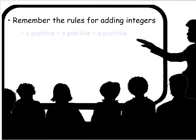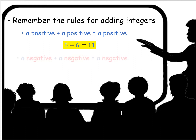For what we're doing today in the activity, we need to remember the rules for adding integers. Positive plus a positive is a positive — five plus six, both are positive numbers, and it equals positive 11. A negative plus a negative is a negative — negative five plus a negative six is negative 11.